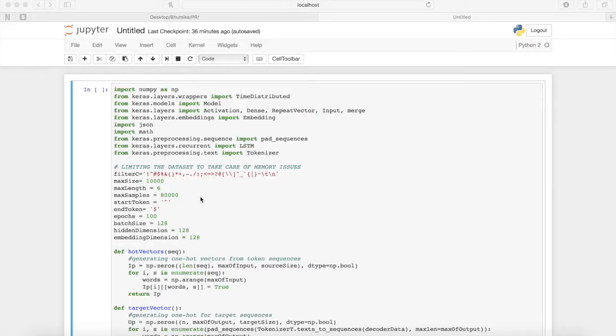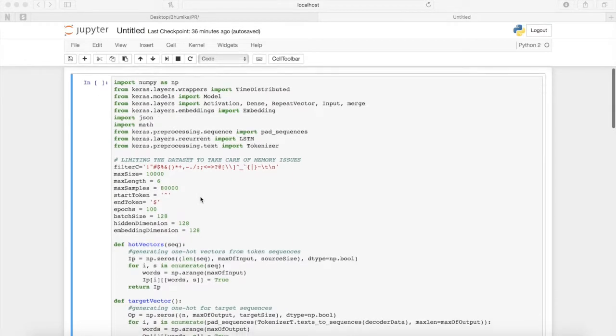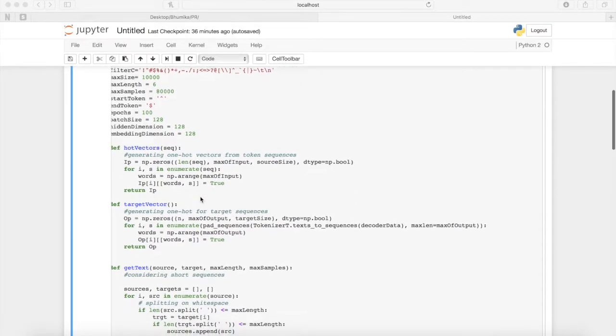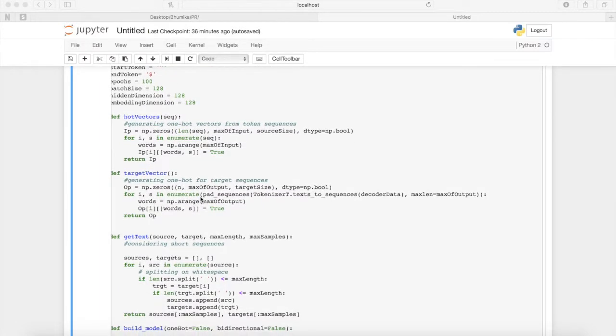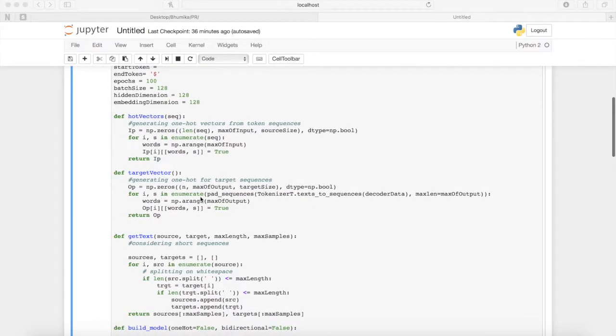Now we will have a look at the code which was made. Keras was used with TensorFlow as backend to implement the model. Dataset was limited to 80,000 in order to avoid memory issues. Other variables like number of epochs were 100, batch size was 128. The function hot vectors generates one-hot vectors from token sequences. The function target vector generates one-hots for target sequences.